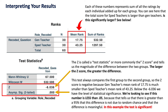In order to understand whether this is a statistically significant difference, our Mann-Whitney U test has run what's called a Z test. The Z score is our test statistic — the number that tells us whether or not our Mann-Whitney U test is showing a difference between these two groups that is happening above and beyond random chance. This test statistic tells us the magnitude of the difference between the two groups. The larger the Z score, the greater the difference.